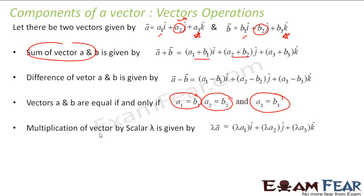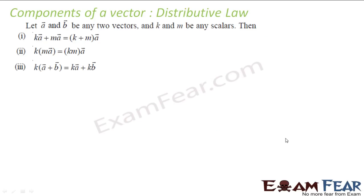When you multiply a vector by a scalar — note, I'm not talking about vector-vector multiplication, that comes later — you multiply the î component by that scalar, the ĵ component also, and the k̂ component also. For example, if you multiply some vector by 5, you multiply the î component by 5, ĵ by 5, and k̂ by 5.